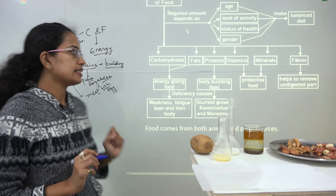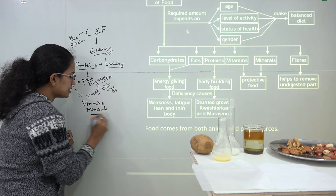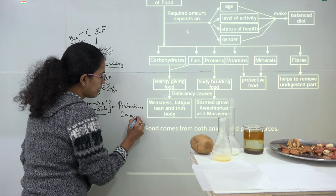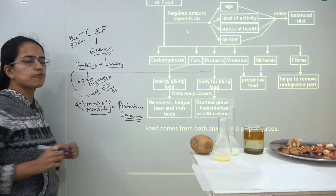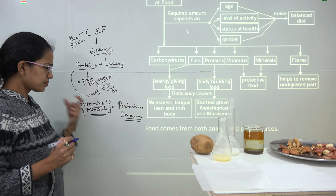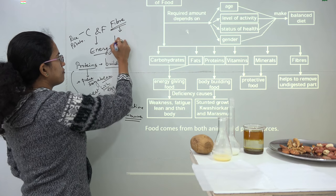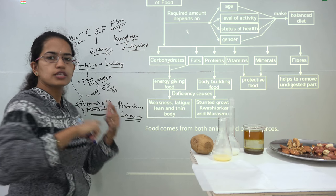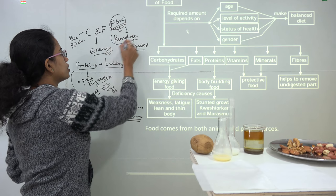The next category is vitamins and minerals, which are considered as protective food. They help build the immune system, giving us resistance to fight various diseases. Vitamins and minerals are obtained from fruits and green leafy vegetables. Finally, fiber is essential for the diet — it comes as roughage and most of it is removed as undigested matter, but it is important for the normal functioning of the body.